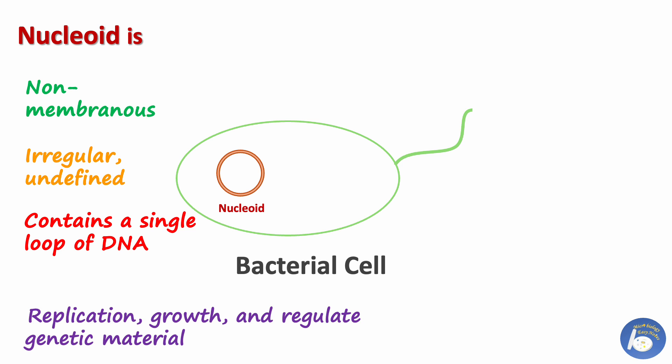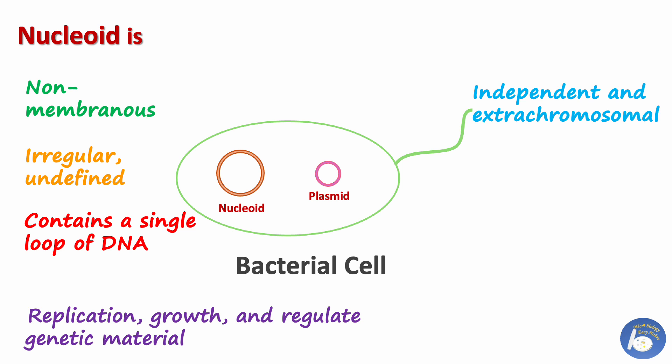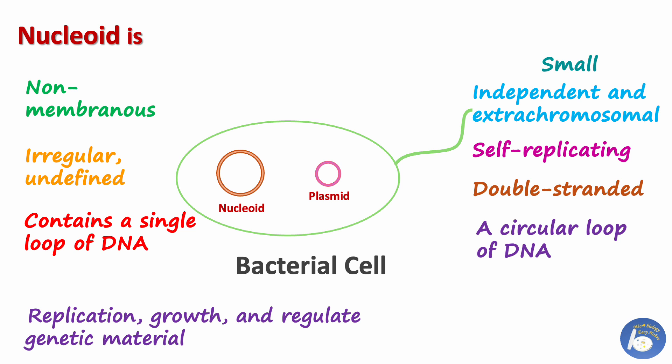Therefore, without the nucleoid, a bacterial cell cannot survive. Besides the nucleoid, a bacterial cell may also contain a small, independent, self-replicating circular loop of DNA. This DNA loop is called a plasmid.